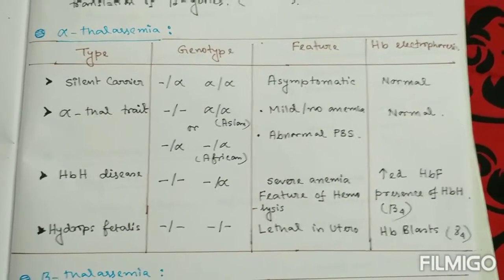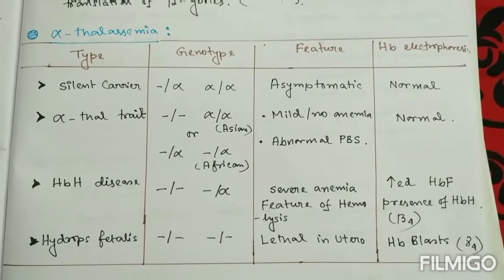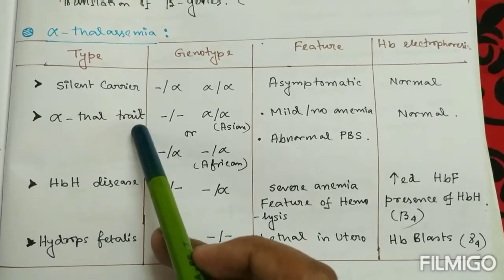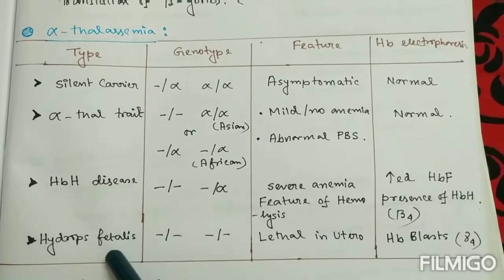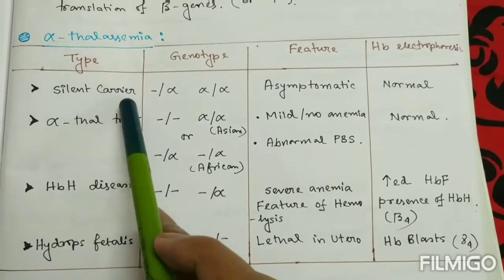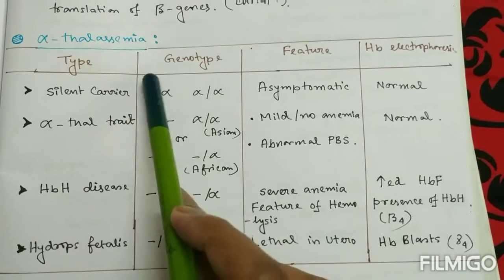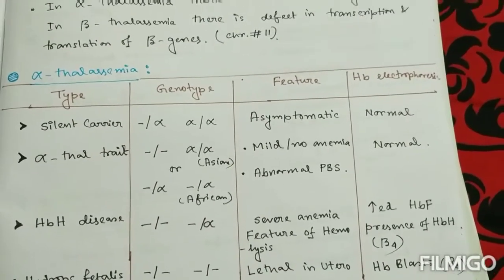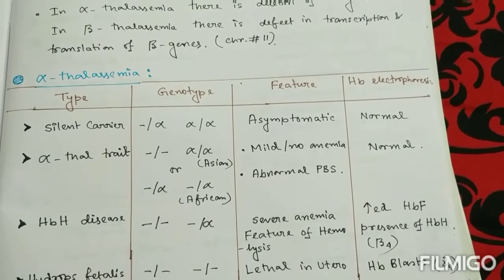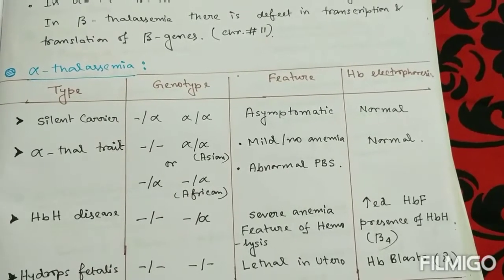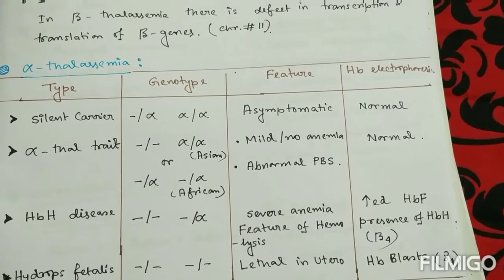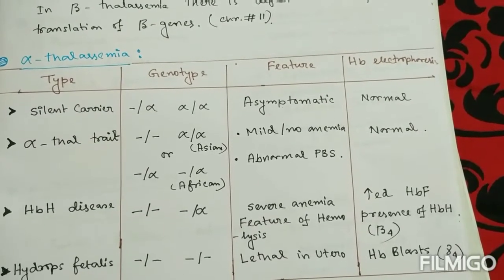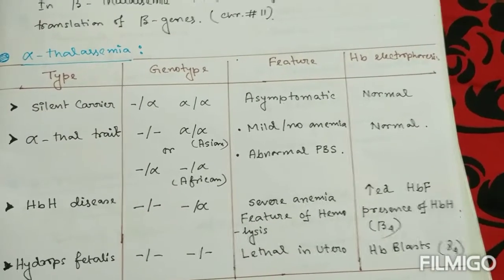There are various types of alpha and beta thalassemia. The alpha thalassemia types are: silent carrier, alpha thalassemia trait, HbH disease, and hydrops fetalis. In the silent carrier state, among the four alleles of the alpha gene, only one allele is absent or deleted, and manifestations will not be seen — it is almost asymptomatic — and hemoglobin electrophoresis is normal.